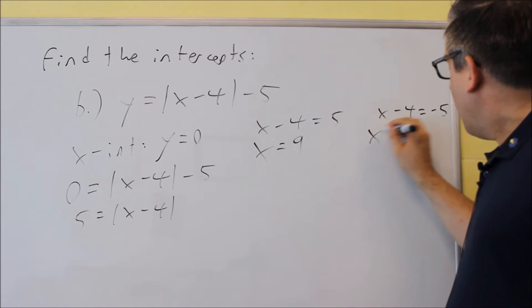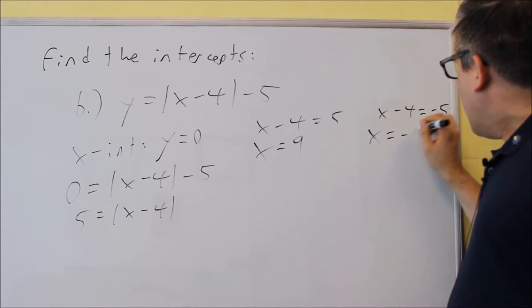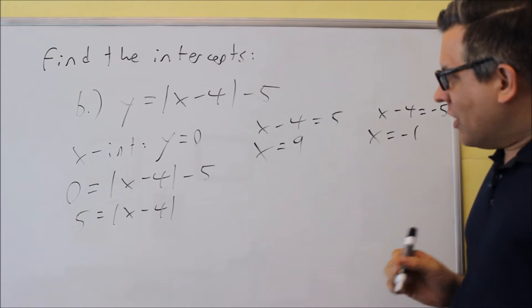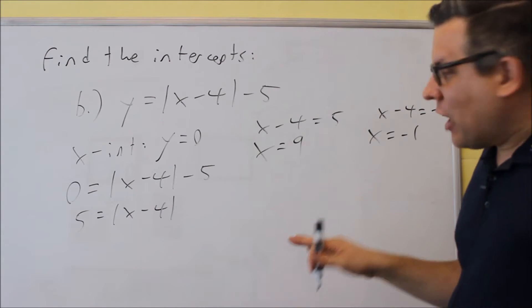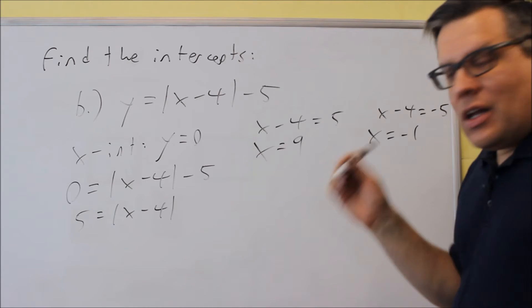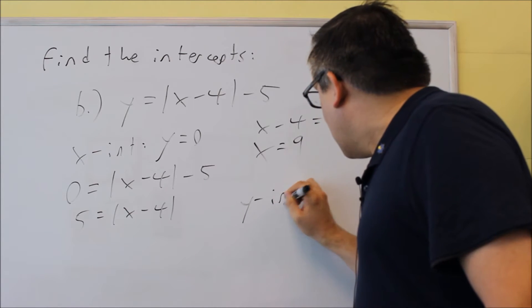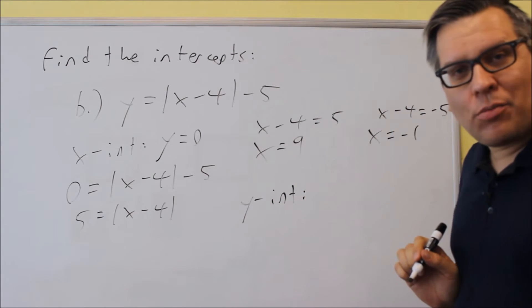Over here, we're going to add 4 to both sides and you get negative 1. So we get two x-intercepts for this problem, a 9 and a negative 1. Let's also take a look at the y-intercept. We'll do that down here.